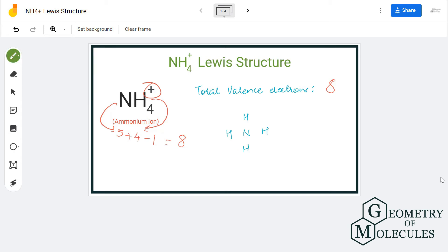To show the bonds between nitrogen and hydrogen, we will place a pair of electrons between each hydrogen and nitrogen atom. So two, four, six, and eight. As you can see, we have used up eight valence electrons here.